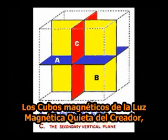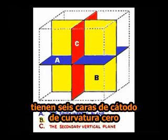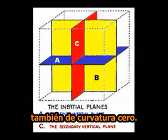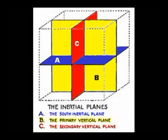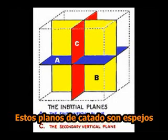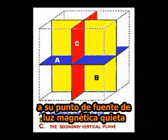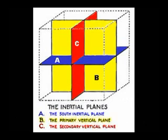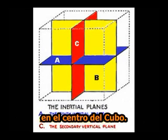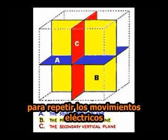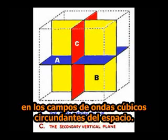The magnetic cubes of the creator's still magnetic light have six cathode faces of zero curvature and three interior cathode planes of zero curvature as well. These cathode planes are mirrors which both reflect electrically simulated light to its source point of still magnetic light at the cube center, and act as fulcrums to repeat the electrical motions into the surrounding cubic wave fields of space.